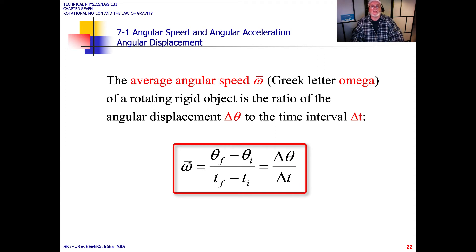We define the average angular speed omega as the final angle minus the initial angle. So if we started at 0 and move to pi over 2, we would have pi over 2 minus 0, and that would give us delta theta. And now we're tracking the amount of time it takes to move through that angle.